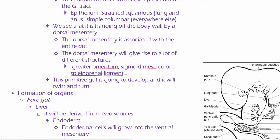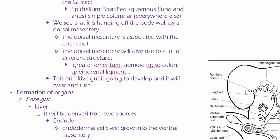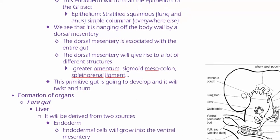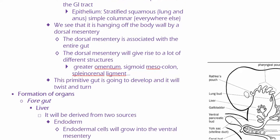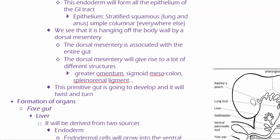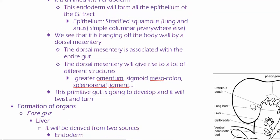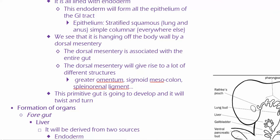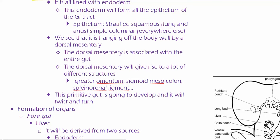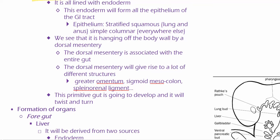There's going to be something hanging off of the body wall. The gut tube is going to be hanging off the body wall — it's going to be suspended off the body wall by the dorsal mesentery.